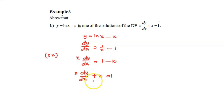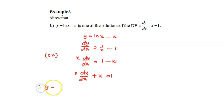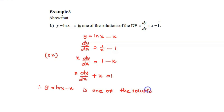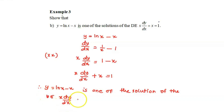This equation we have obtained is exactly the differential equation given in the question. So we have shown that y equals ln x minus x is one of the solutions of the DE x dy over dx plus x equals 1. We have proved it here.